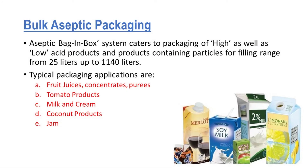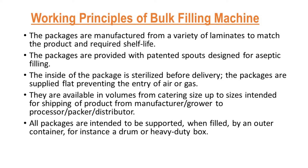In the case of bulk aseptic packaging, an aseptic bag-in-box system caters to packaging of high as well as low acid products and products containing particles, for filling range from 25 liters up to 1,140 liters. Typical packaging applications are fruit juices, concentrates, purees, tomato products, milk and cream, coconut products, and jam. The packages are manufactured from a variety of laminates to match the product and required shelf life, and are provided with patented spouts designed for aseptic filling. The inside of the package is sterilized before delivery. The packages are supplied flat, preventing the entry of air or gas. They are available in volumes from catering size up to sizes intended for shipping of product from manufacturer, grower to processor, packer, and distributor. All packages are intended to be supported, when filled, by an outer container, for instance a drum or heavy duty box.